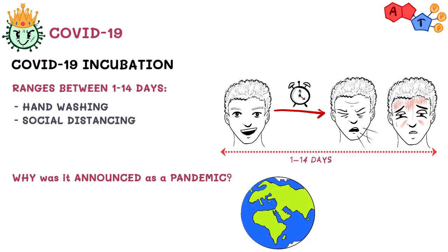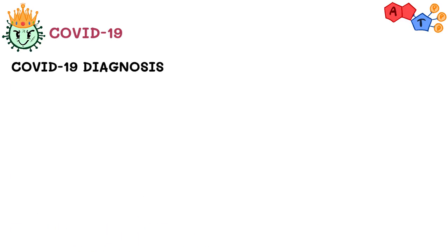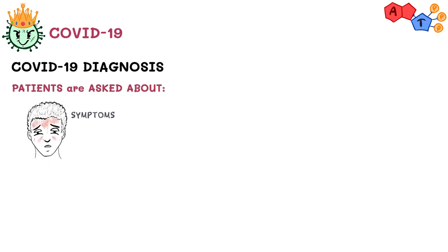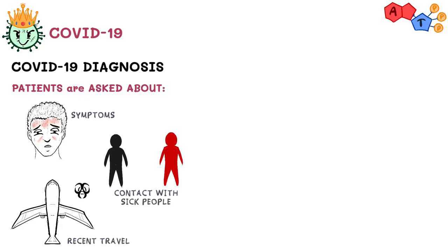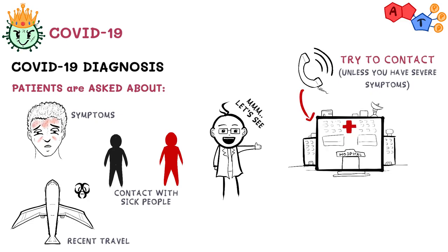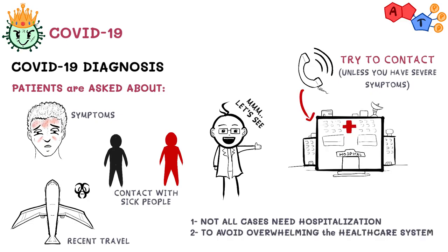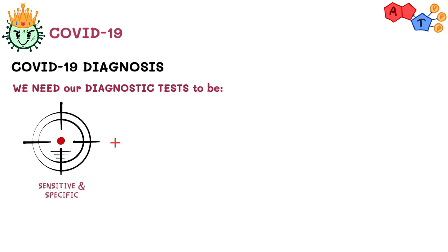Why was COVID-19 announced as a pandemic? According to the World Health Organization, a pandemic is a worldwide spread of a disease, usually from a new virus that most people don't have immunity against yet. How do we diagnose and catch this disease? Patients are asked about the symptoms they're having, in addition to recent contact with an infected or symptomatic individual, or traveling to an area that has an outbreak. The treating physician will then decide whether further tests are indicated. Remember, it's advised to call the hospital or healthcare facility first before going. Not all cases require hospitalization, and we don't want to overwhelm our healthcare system. For the diagnosis of COVID-19, we look for tests that are highly sensitive and specific while keeping cost in mind.